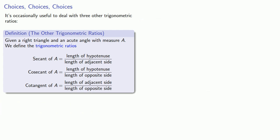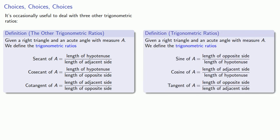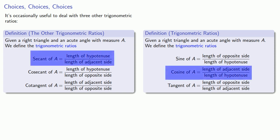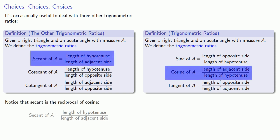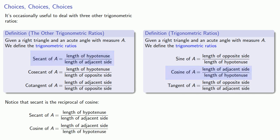It's worth comparing the definitions of these three extra trigonometric ratios to the original sine, cosine, and tangent. Notice that secant is the reciprocal of cosine — secant is the length of the hypotenuse over the length of the adjacent, while cosine is the length of the adjacent over the length of the hypotenuse.